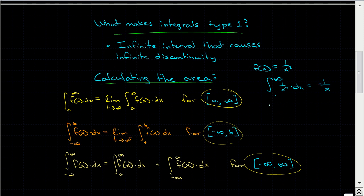We need to evaluate this at infinity and 1. At infinity, it's 1 over x, so 1 over infinity equals 0. At x equals 1, it's negative 1 over 1, which equals negative 1. So we take 0 minus negative 1, which becomes plus 1. That means our area is equal to 1. That's an example of calculating an improper integral.